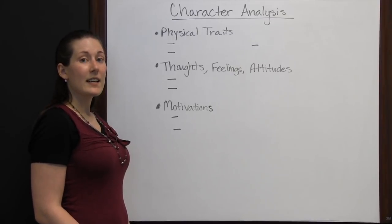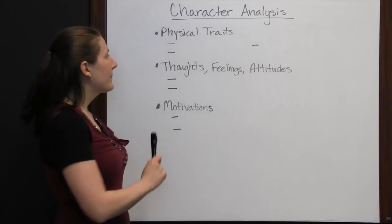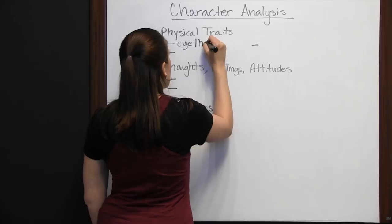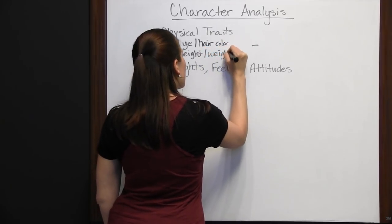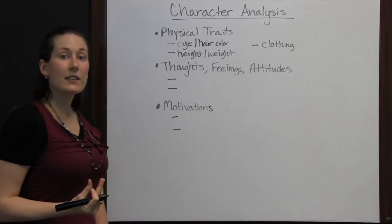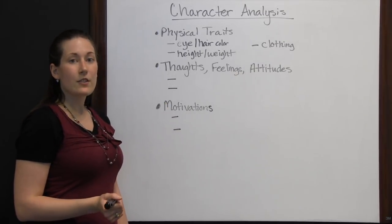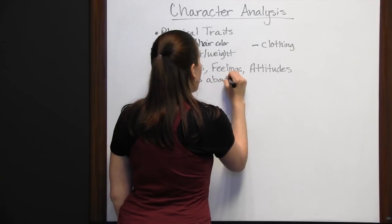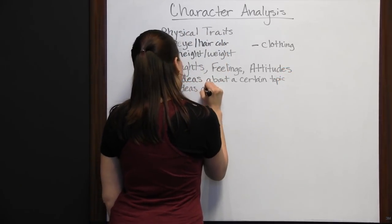When analyzing a character, you should look at the character's physical traits, thoughts, feelings and attitudes, and motivations. A character's physical traits could include their eye and hair color, their height, weight, or clothing — these are just a few examples. You could think of a lot more things to physically describe a character, but their physical traits are important when analyzing the character. Something else to look at are the character's thoughts, feelings, and attitudes — this is the character's ideas about a certain topic or ideas about a certain character.